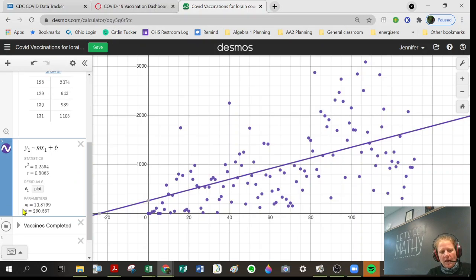You can see here that we have m and b given. Our m is 10, or approximately 11, and our b is 260. We're going to talk more in the next lesson about how we would interpret that. Today's lesson is specifically just how do we get these values from Desmos.com's graphing calculator. I want to repeat that process in the vaccines completed.